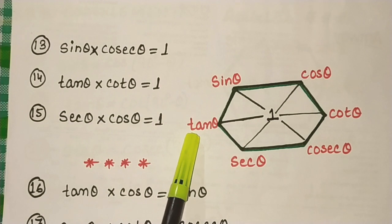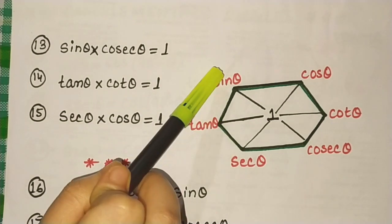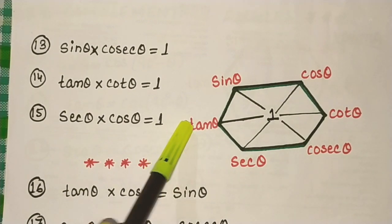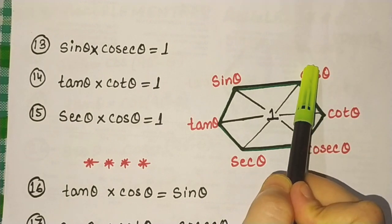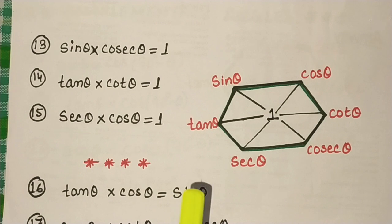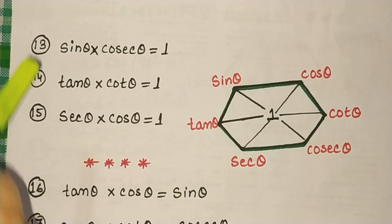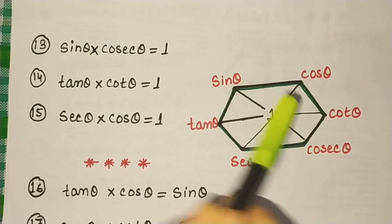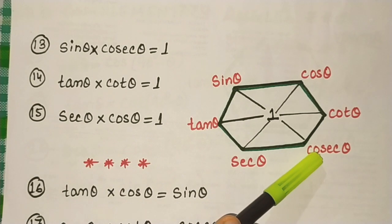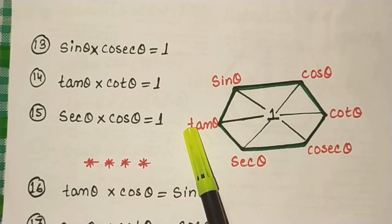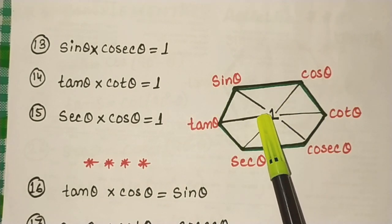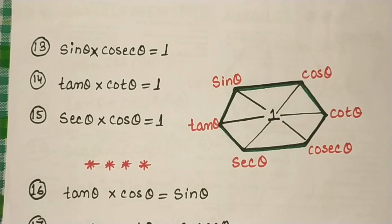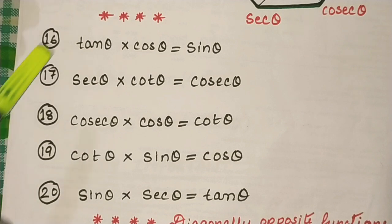Now let us draw another hexagon. I have put 1 in the middle. The diagonally opposite functions multiply to give 1. So: sin θ × cosec θ = 1, then tan θ × cot θ = 1, and sec θ × cos θ = 1. This gives us three more formulae.